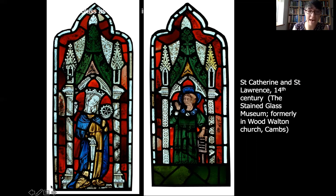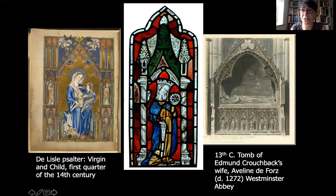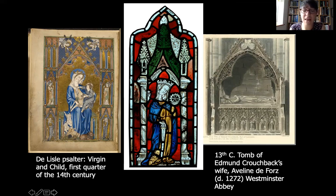They're shown under gothic canopies which not only remind us of the architecture of the medieval parish church but also shrines that were erected at the time. Windows depicting certain saints may have been located near their shrines. Here I'm showing you an illuminated manuscript on the left and an illustration of Aveline de Forz's tomb at Westminster Abbey - figures under niches are very typical of the gothic style, found in a variety of medieval art forms. Stained glass is related to these other medieval art forms and shouldn't be viewed entirely separately.